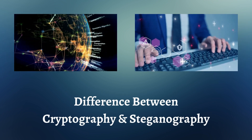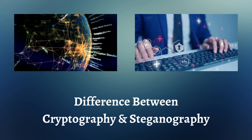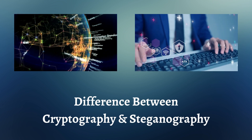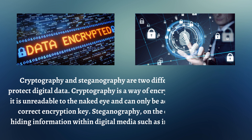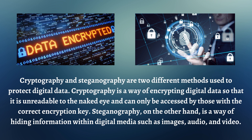Cryptography and steganography are two different methods used to protect digital data. Cryptography is a way of encrypting digital data so that it is unreadable to the naked eye and can only be accessed by those with the correct encryption key. Steganography, on the other hand, is a way of hiding information within digital media such as images, audio, and video.